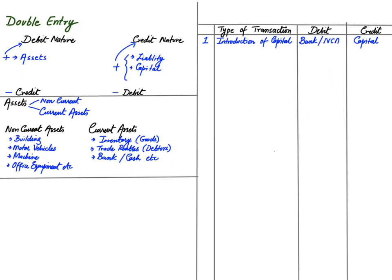It is also possible that I brought a non-current asset into the business. For example, I am using a van at home — a motor vehicle or pickup that can also be used for delivery. I have taken the van from my home to my business. For the business it is a new asset coming in, so we will be debiting the van account or motor vehicle account — we are debiting a non-current asset account.